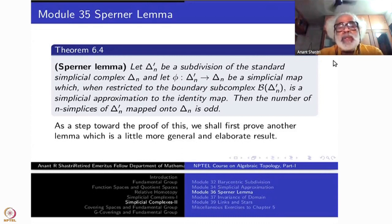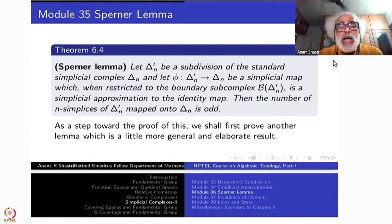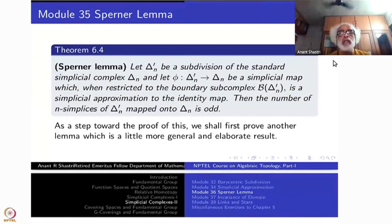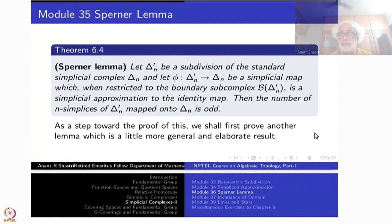The proof uses the combinatorial method of counting in different ways — two or three different ways. I am going to state another version of the same lemma, which will be more elaborate, and that will give the proof of this one once you prove that. That is the idea of the proof.